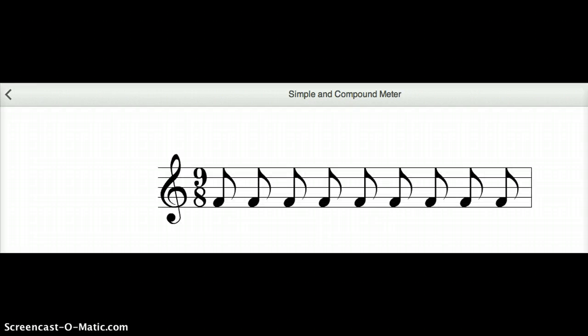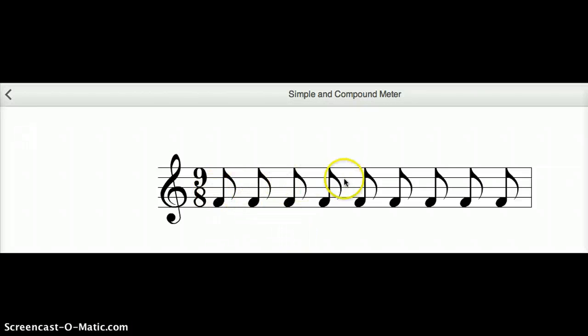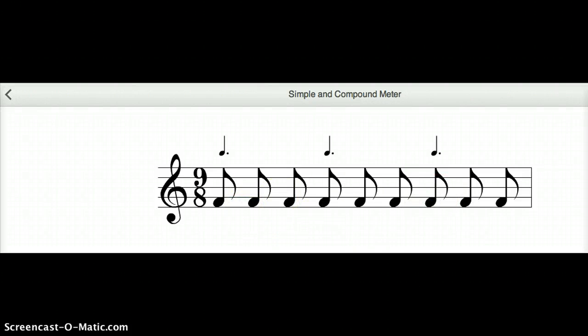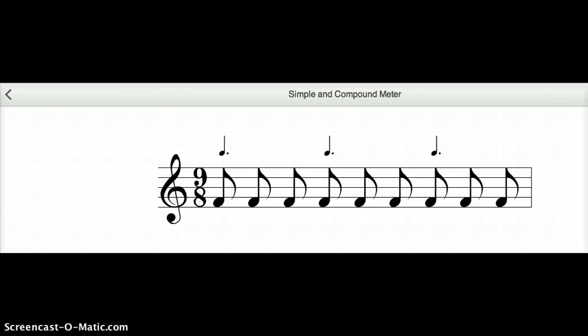Now, what would 9/8 be? You would group them as one, two, three, four, five, six, seven, eight, nine. They're grouped in threes, as you can see here, and there are three big beats per measure, so that's compound triple.